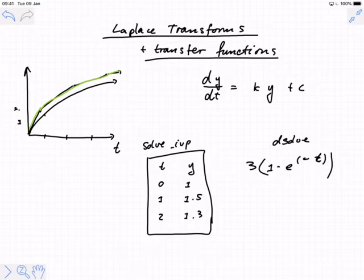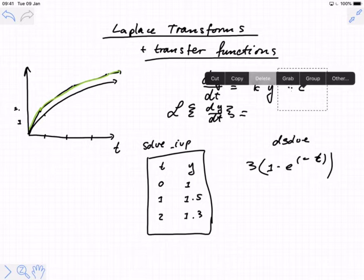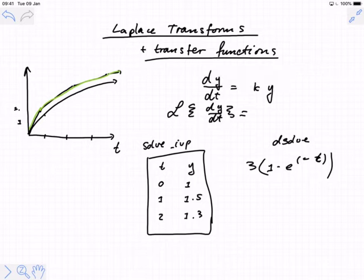The process that we're going to follow is to take a differential equation like this, to Laplace it, you know, and you thought that you were free from the Laplace transform forever. So we're going to manipulate all of our equations to have this very special form where there is no constant term. And we're going to do the Laplace transform of the left-hand side and the right-hand side.